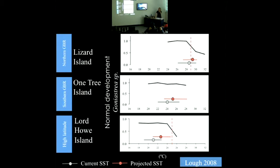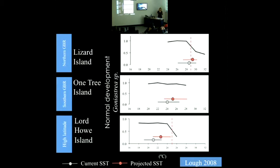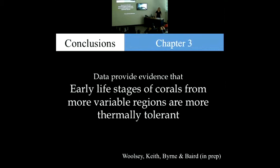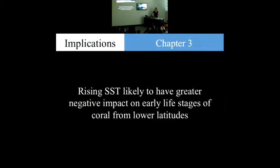These schematics have been applied to the rates of normal development — the proportion of embryos that weren't developing abnormally. In the northern Great Barrier Reef for Goniastrea species, and at Lord Howe Island where we weren't able to collect the same species but it's still in the Goniastrea genus. At One Tree Island, we weren't able to find a true upper or lower threshold. But looking at the difference between Lizard Island and Lord Howe Island, in the absence of adaptation, the lower latitude populations are at greater risk. The results are consistent with the hypothesis that greater tolerance breadth occurs at higher latitudes, and rising sea surface temperatures are likely to have a greater negative impact on early life stages of corals from lower latitude regions.